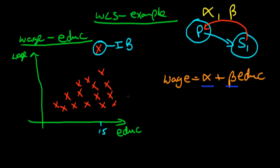Ordinary least squares treats all deviations of points from the line equally — it doesn't depend on an individual's level of education. So when it encounters an anomalous point at the high-education end, it tries to minimize the distance of the fitted line from that point as well as all other points. The fitted line gets deliberately skewed upwards towards that anomalous point.